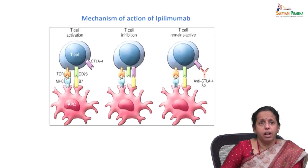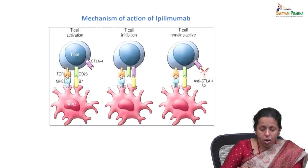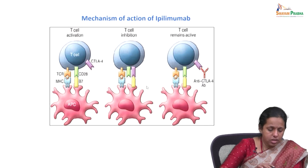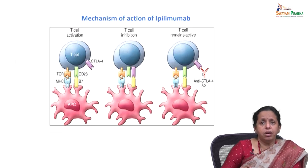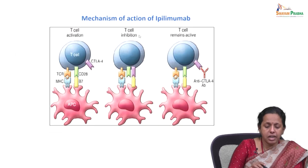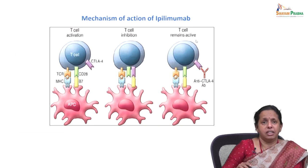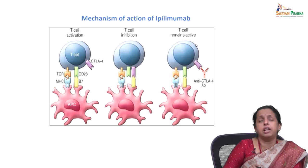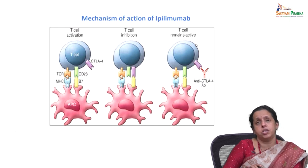Anti-CTLA-4 antibodies such as ipilimumab are monoclonal antibodies that block CTLA-4 binding to B7, targeting the co-signaling pathway and preventing inhibition of T cell function. After blocking, T cell inhibition is removed and T cells remain active. This is path-breaking research for ipilimumab, and several clinical trials are ongoing for both melanoma and non-squamous cell lung carcinoma, improving patient response rates.